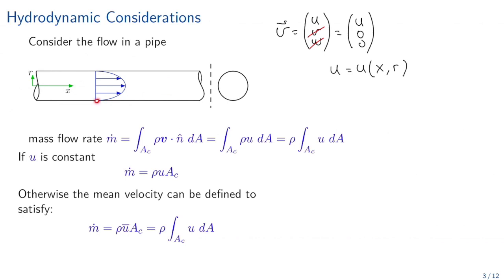We can identify that at the contact with the wall the velocity is zero, and at the middle the velocity is maximum.